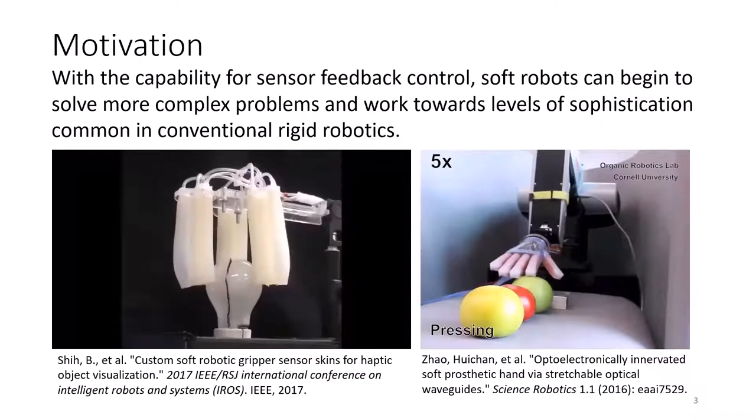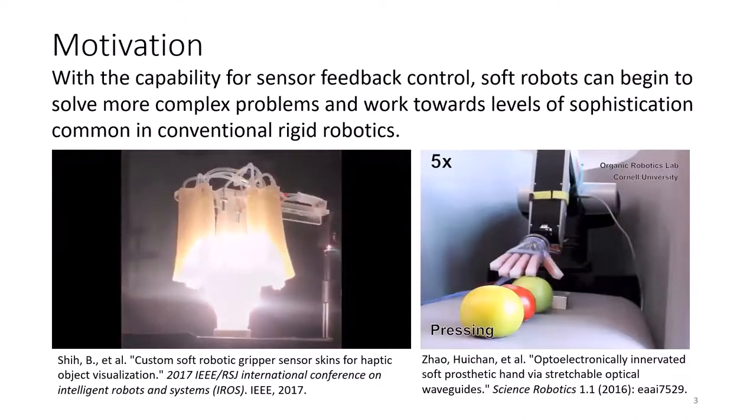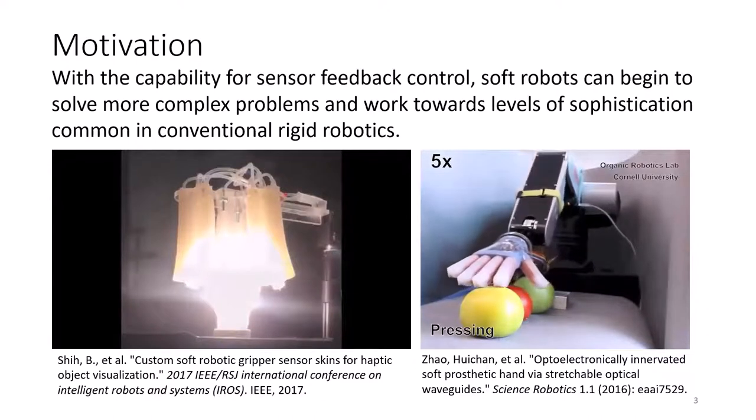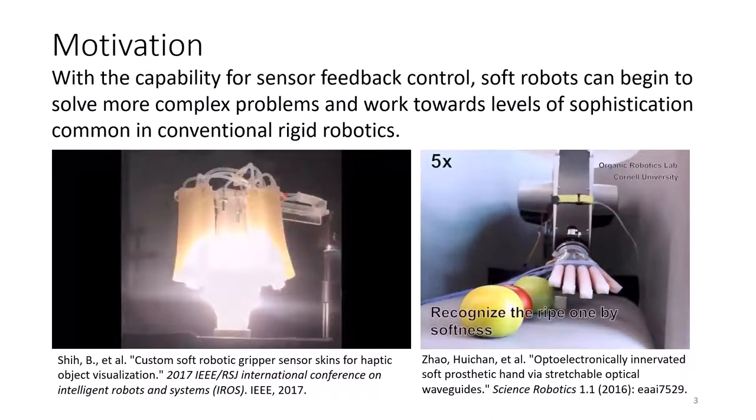Now why is this question important? Progress in broader applications of soft robots relies on the development and implementation of autonomy and decision making in soft robotic systems. With the capability for sensor feedback control, soft robots can begin to solve more complex problems and work towards levels of sophistication common in conventional rigid robotics.